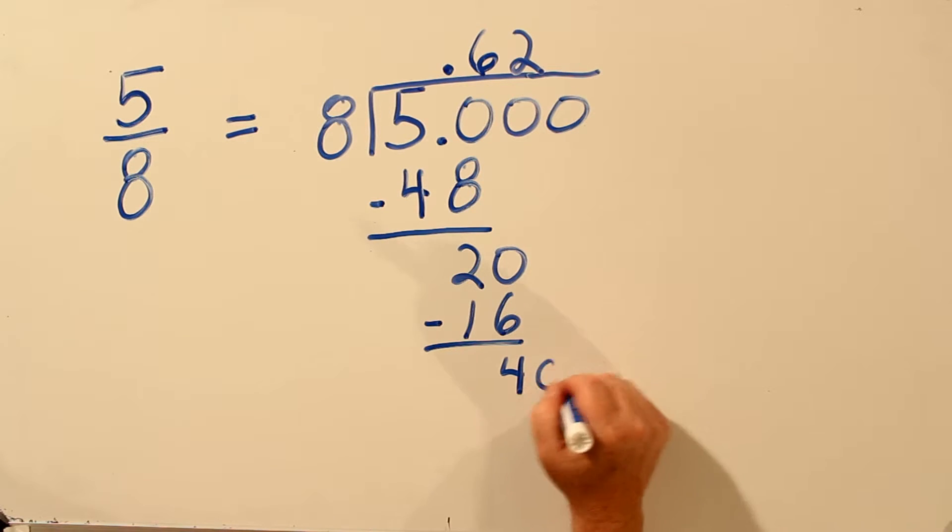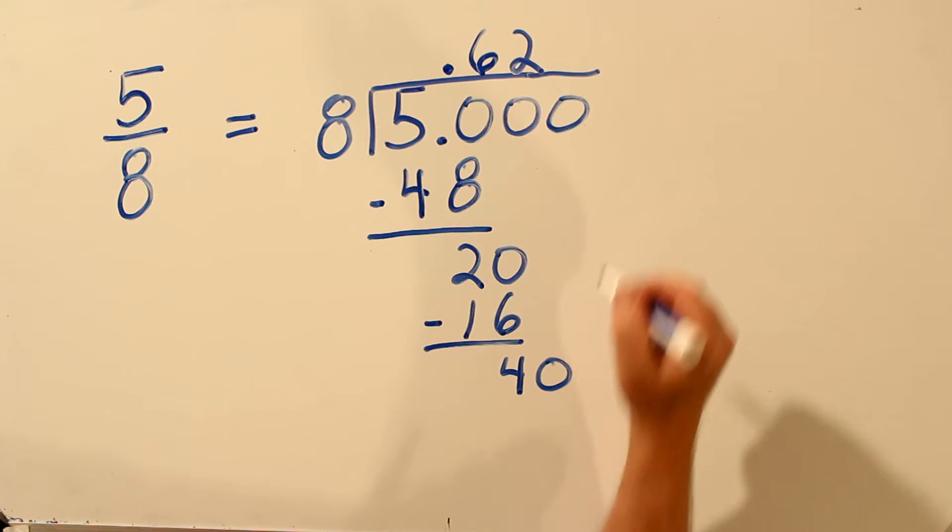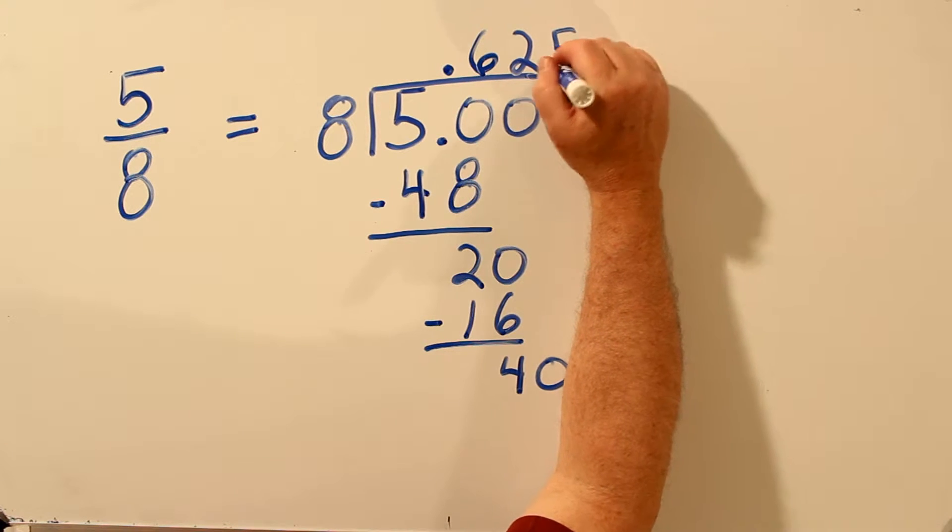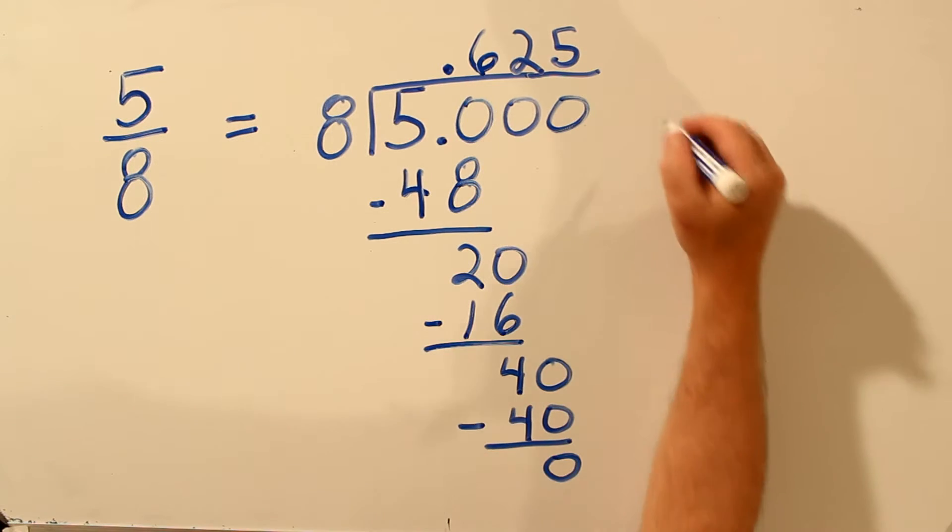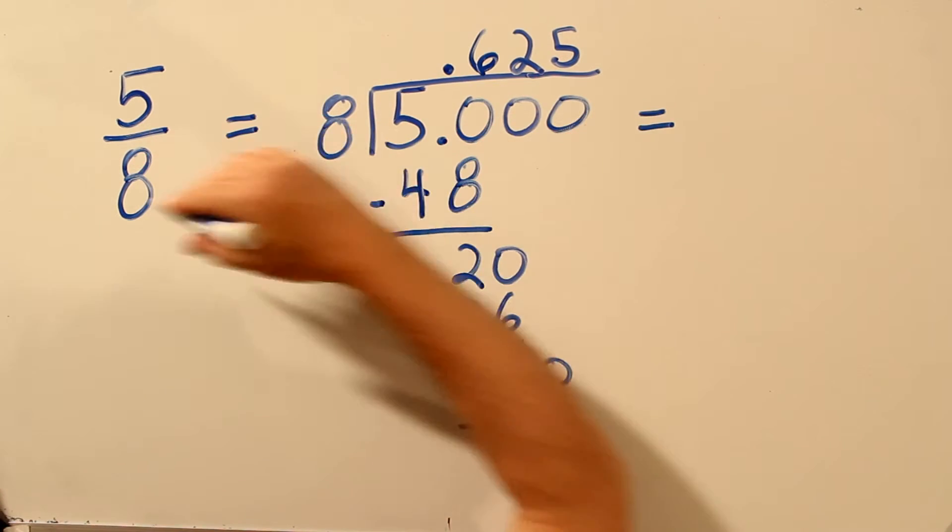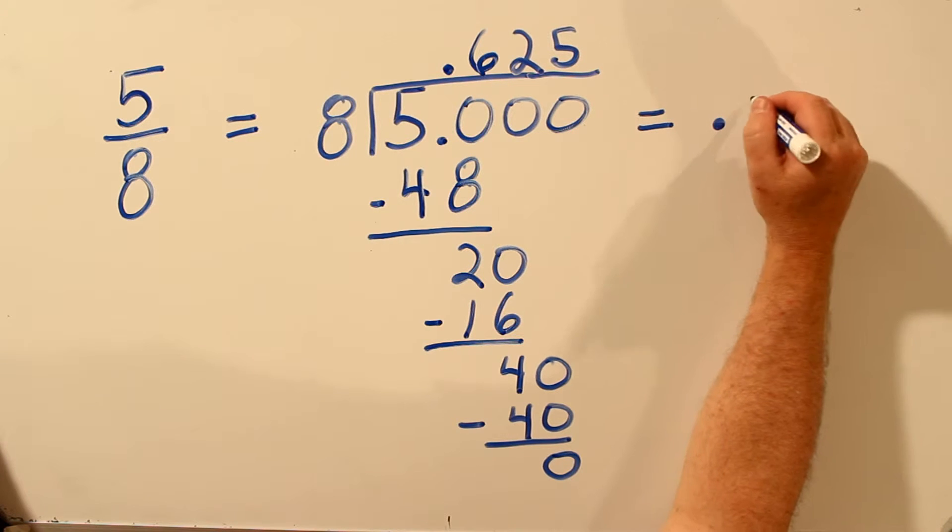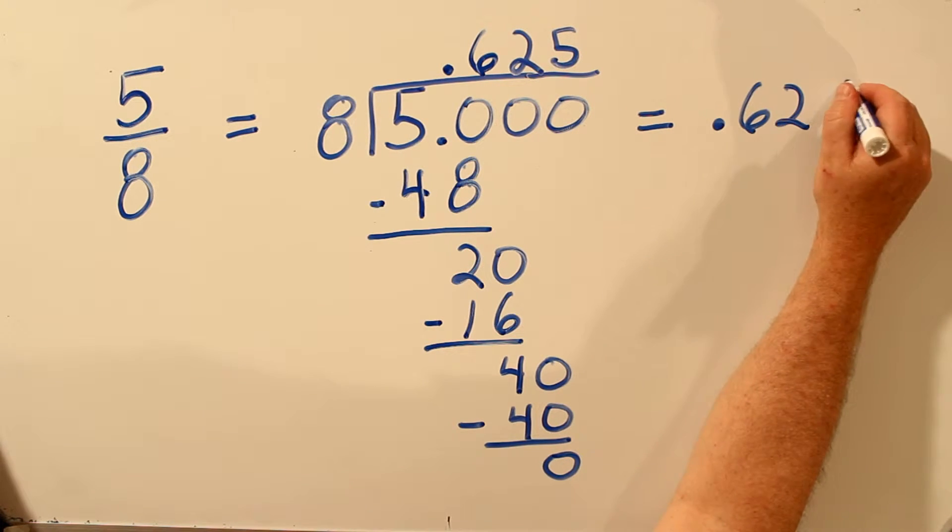We'll add another 0. 8 into 40 goes 5 times. 5 times 8 is 40. Remainder 0, so we're done. So 5 eighths, written as a decimal, is 0.625.